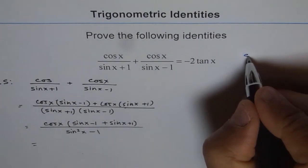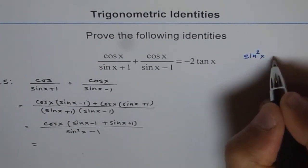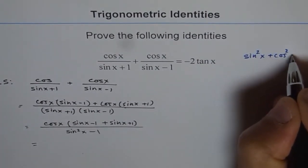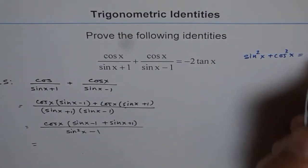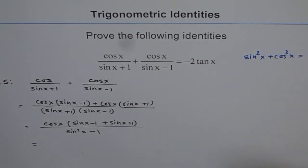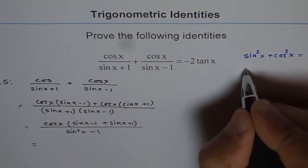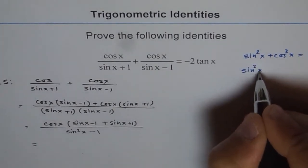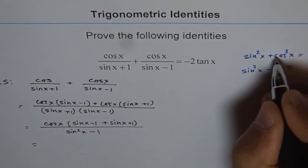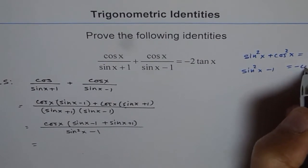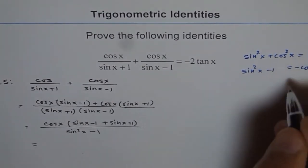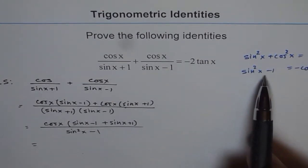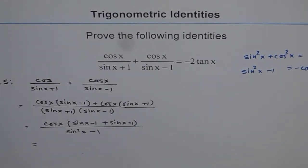You know sin squared x plus cos squared x equals 1. So if I bring 1 to this side, it becomes sin squared x minus 1 equals minus cos squared x. So when you rearrange the formula, you get sin squared x minus 1 as minus cos squared x.